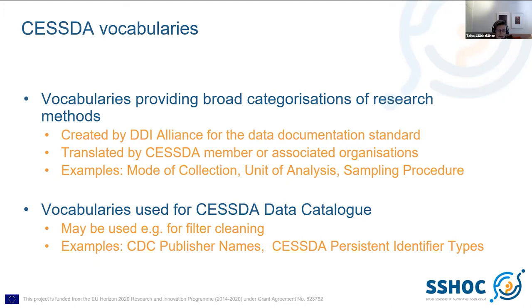Some examples include mode of collection, unit of analysis, and sampling procedure. There are also vocabularies used for practical purposes — for example, the SESTA data catalog harvests metadata from different organizations. These organizations who publish metadata are called publishers, and there's a filter for them in the data catalog. Using raw metadata for this filter got quite messy due to typos, and the user interface is only in English while metadata and organization names can be in any language, and organization names may have changed over time.